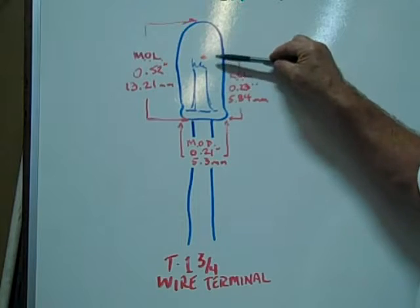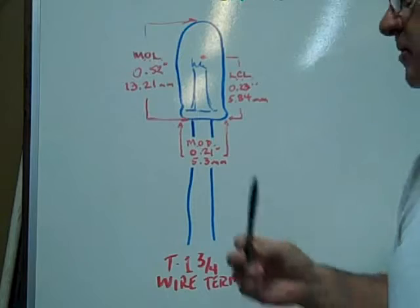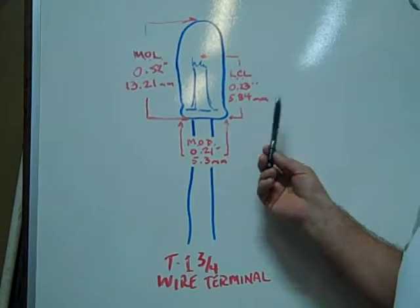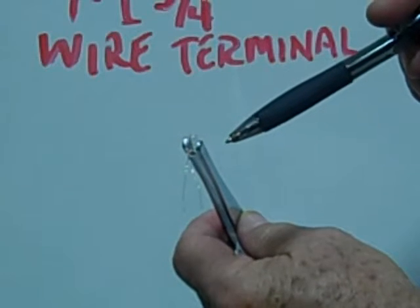The light center length is 0.23 inches, 5.84 millimeters. This is an example of a number 2187 miniature bulb.